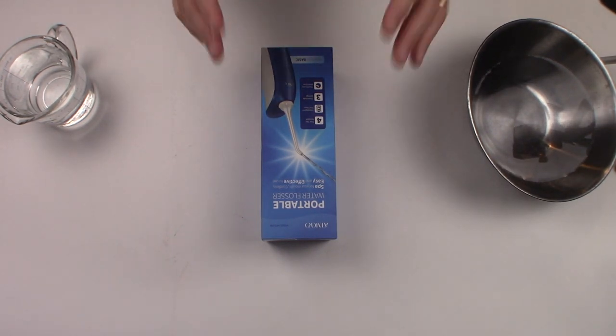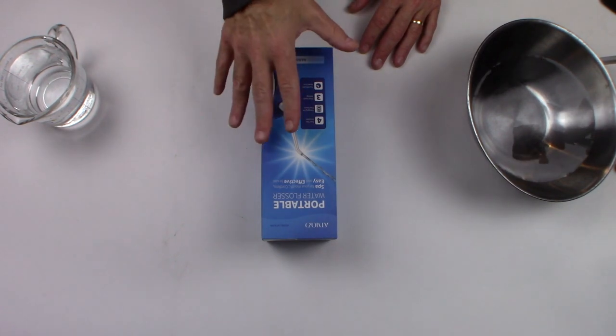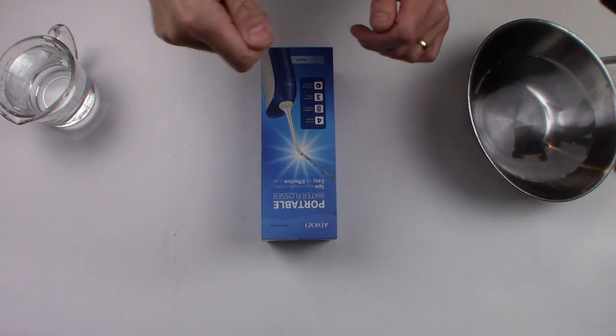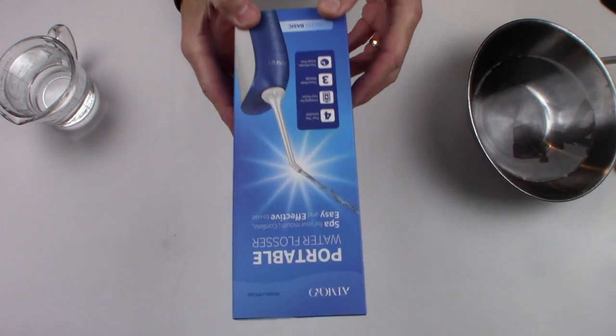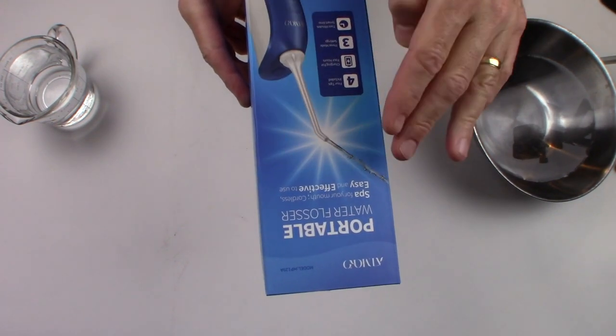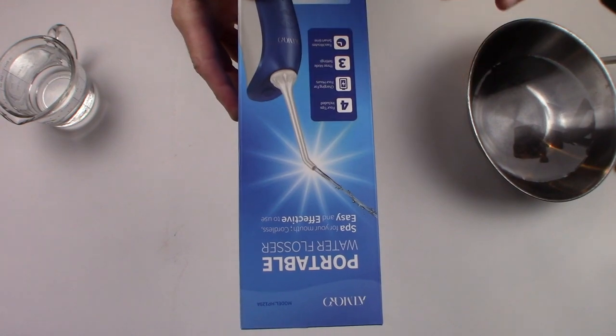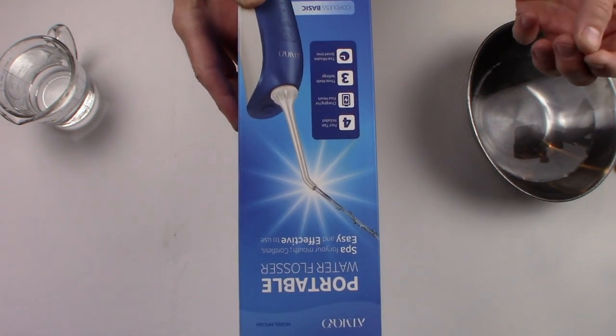Today we're looking at a water flosser from a company called Automato. Basically, water flossers use jet water technology and shoot water in between the teeth, helping break up debris between the gums and teeth, cleaning your teeth more efficiently and hygienically.